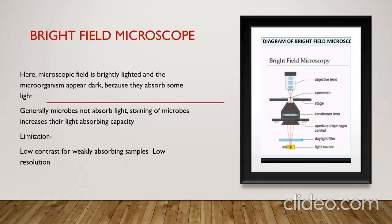In bright field microscope, the field is bright and the microorganism appears dark. This is because the microorganism absorbs the light. Normally, microorganisms have no capacity to absorb the light, so staining of microbes increases their light absorbing capacity. The limitation of this bright field microscope is low contrast for weakly absorbing samples and low resolution power.